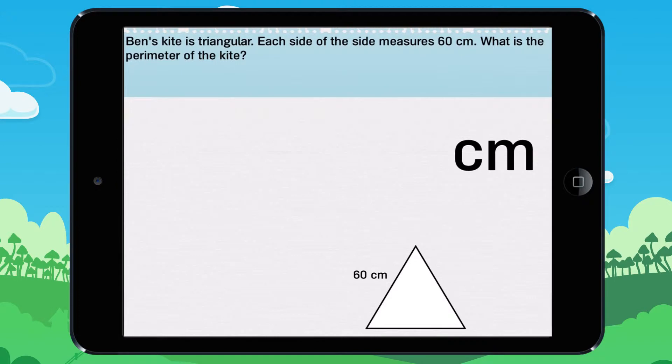Ben's kite is triangular. Each side of the side measures 60 cm. What is the perimeter of the kite?